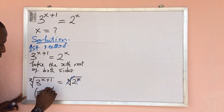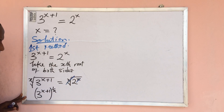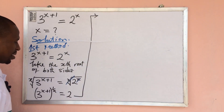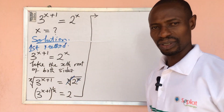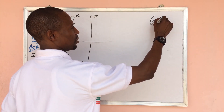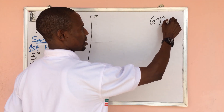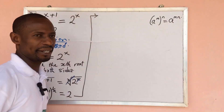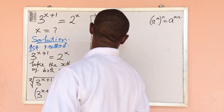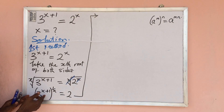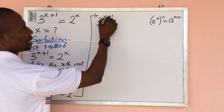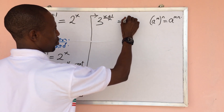This gives us one, all to the power of one over x, equal to two. Now according to the law of indices, if we have a to the power of m, all to the power of n, we can open this up to give us a to the power of m times n. Applying this law, we get three to the power of (x plus one) over x, equal to two.